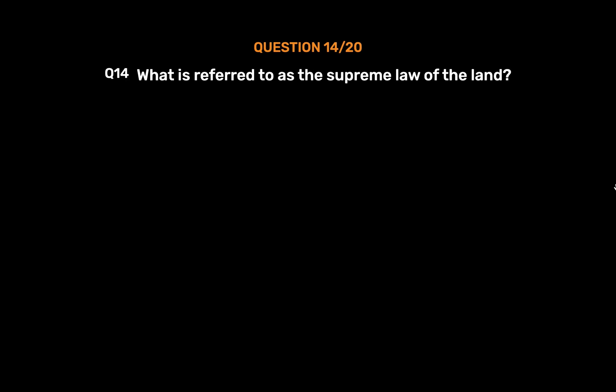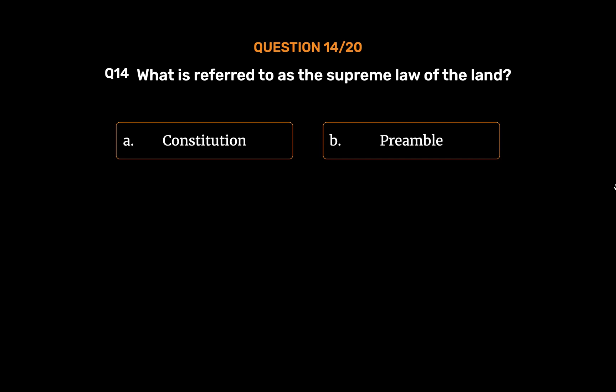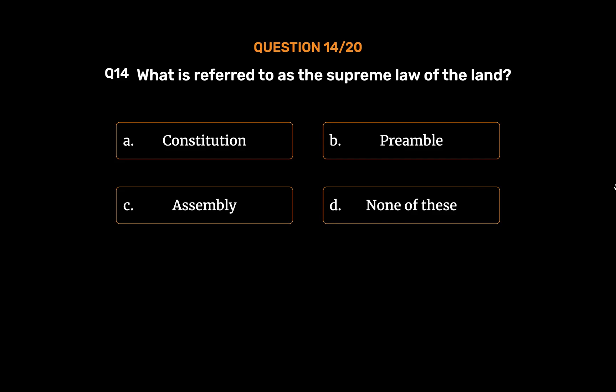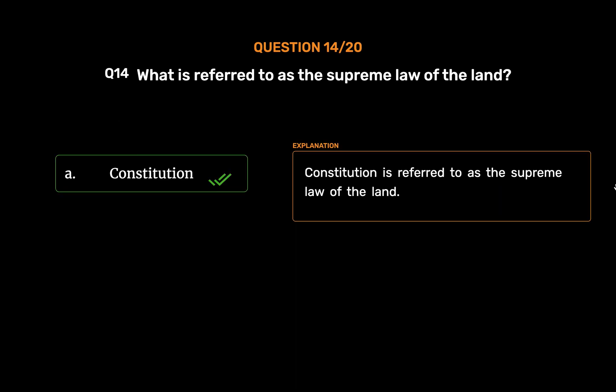Question No. 14. What is referred to as the Supreme Law of the Land? Option A: Constitution. Option B: Preamble. Option C: Assembly. Option D: None of these. The correct answer is Option A: Constitution. The Constitution is referred to as the Supreme Law of the Land.